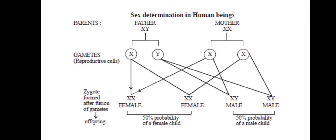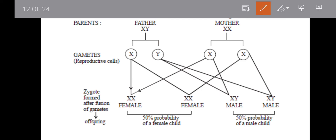This chart shows sex determination. The parents are the father and mother. The father is male with XY chromosomes, and the mother has XX chromosomes. These are the parental chromosome pairs.